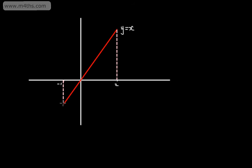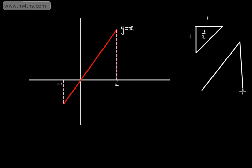We can see that we're going to have two triangles here. If we look at the first triangle, it's going to have a base of 1 and a height of 1, so the area is 1 × 1 ÷ 2 = 1/2. If we look at this triangle, what we've got is a base of 2 and a height of 2 — since y = x, the x-coordinate is 2 and the y-coordinate is 2. So this is 2 × 2 ÷ 2 = 2.